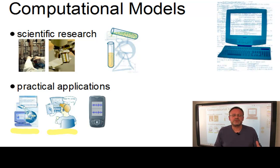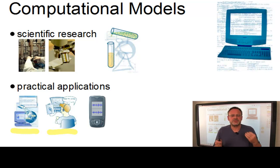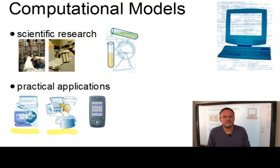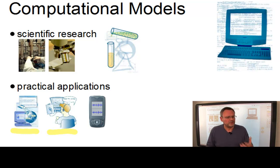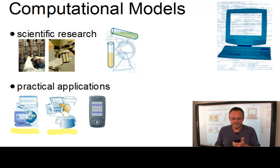Furthermore, human language technologies can allow computer systems to be accessible by everyone and to support them in more intelligent and flexible ways than before. This becomes increasingly important as computers continuously appear in new areas and applications and more and more people with different backgrounds are using them. For technological purposes, a computational model does not have to reflect the way humans process language at all. All that matters is that it works for the application it is intended to support — like my smartphone here, which can process speech input.